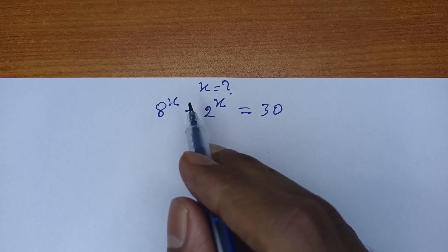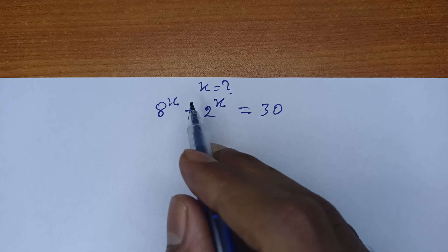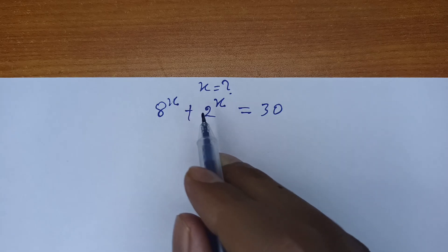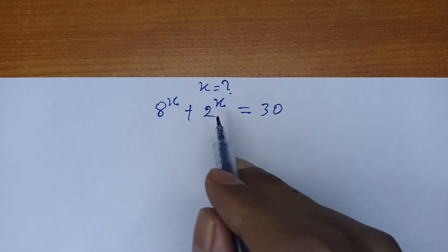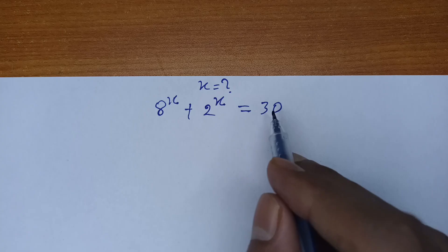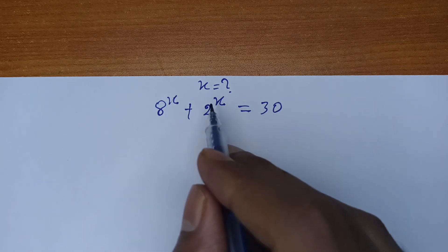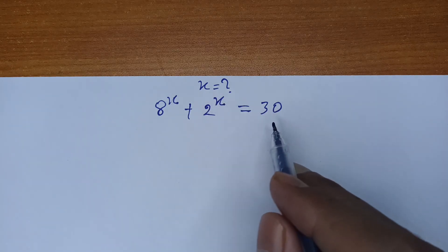Hello everyone, in this video we will solve an interesting Japan math olympiad question. Our equation is 8 to the x plus 2 to the x equals 30. We find out what is the value of x.